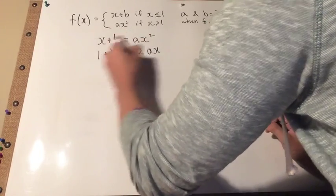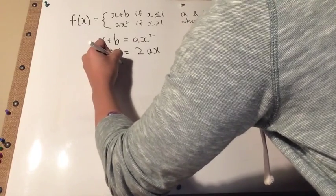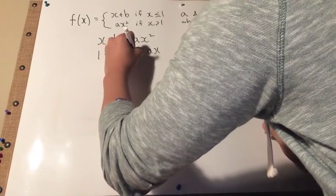If you move the 2 over, it would be 1 half equals ax.